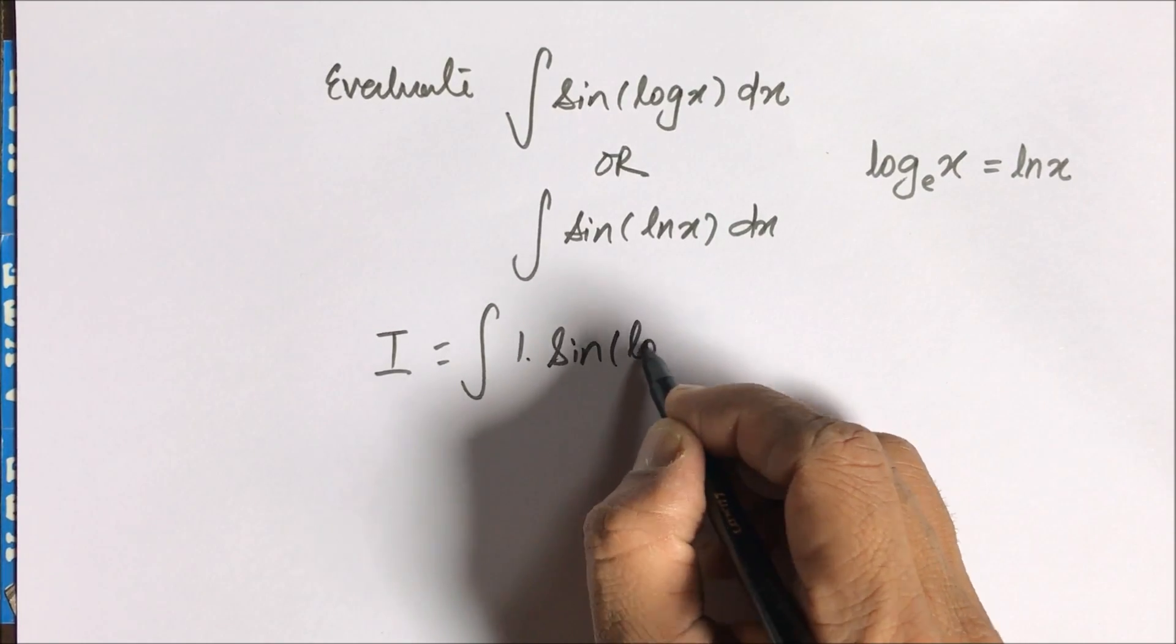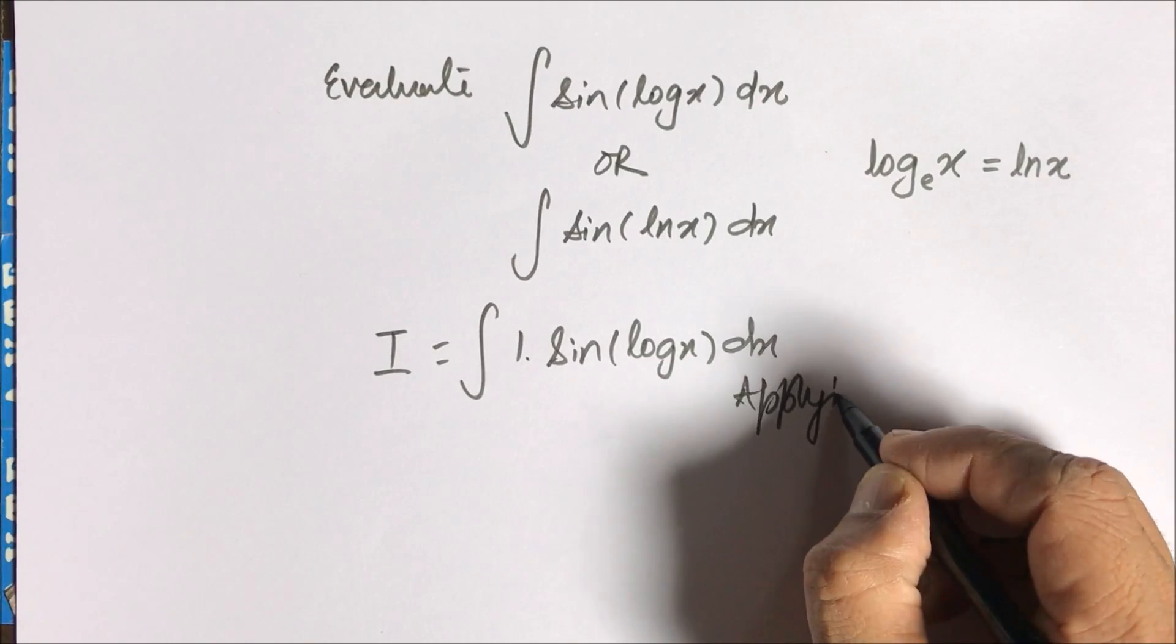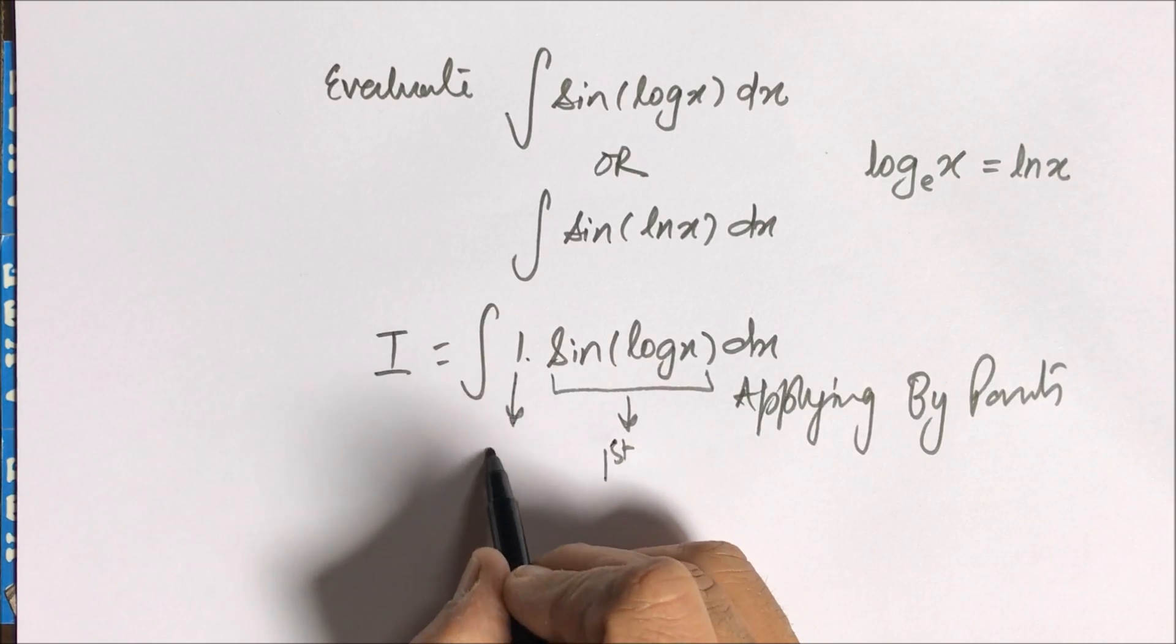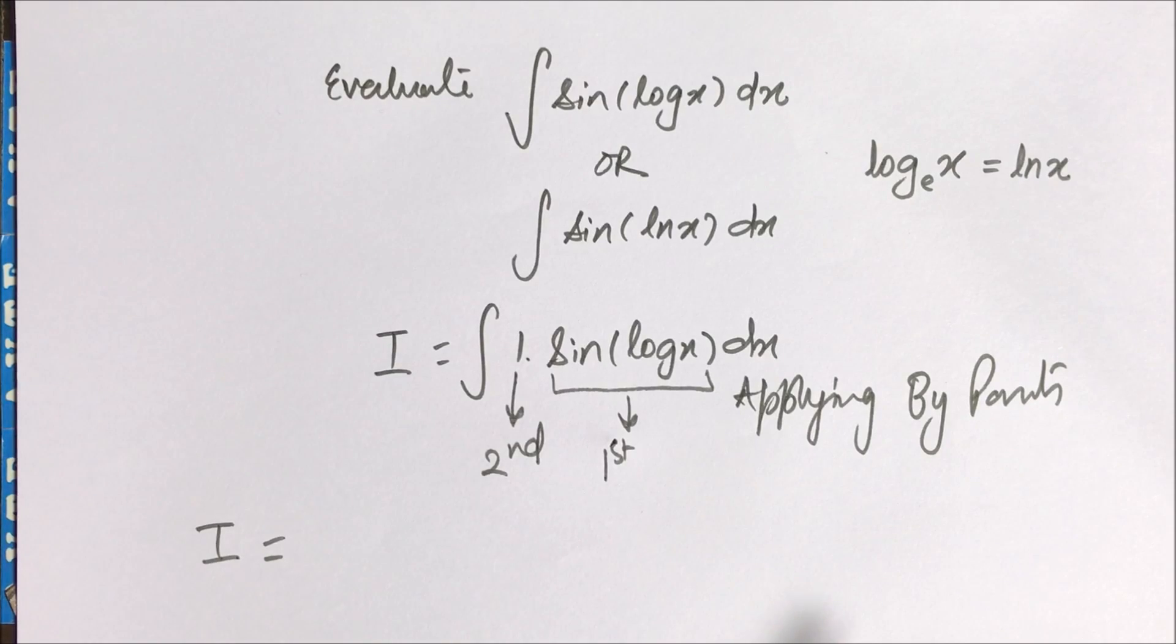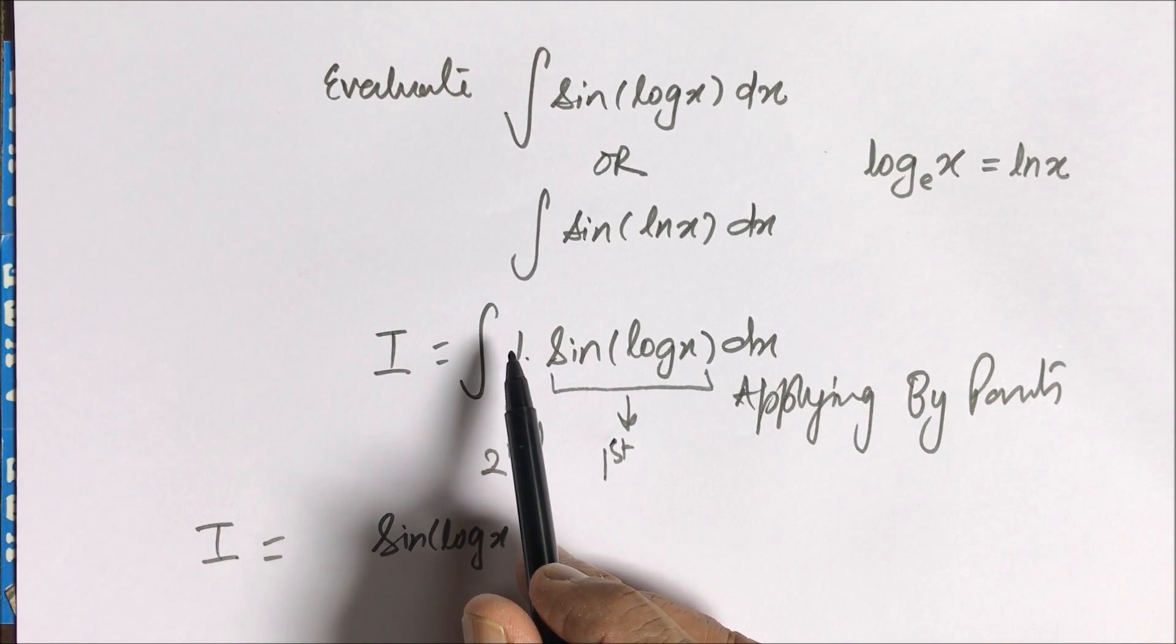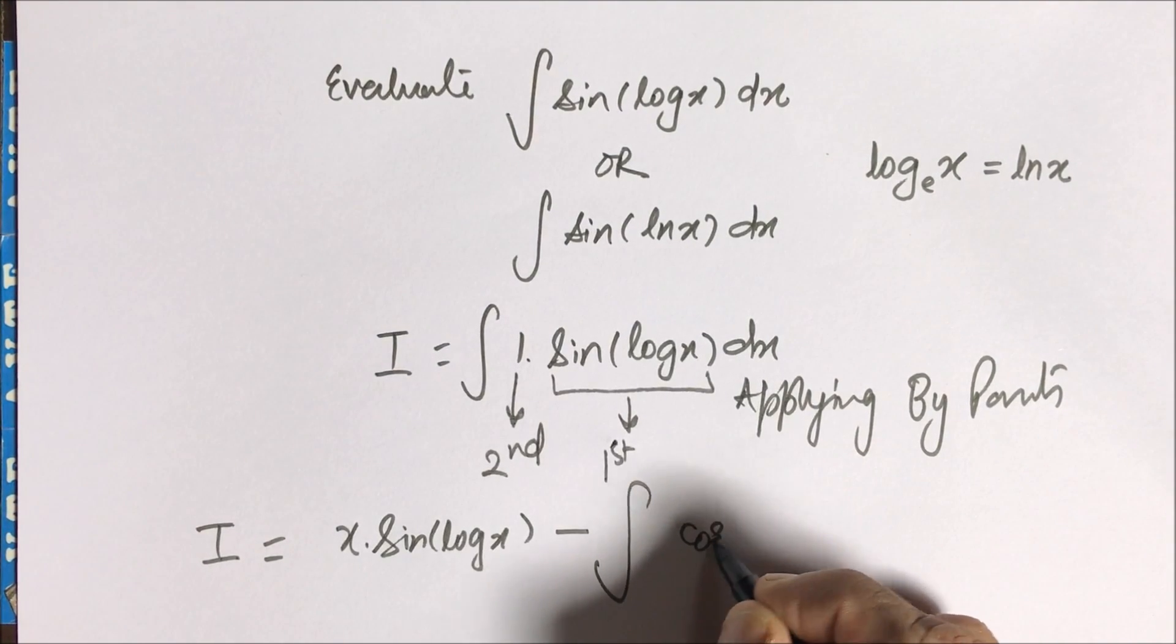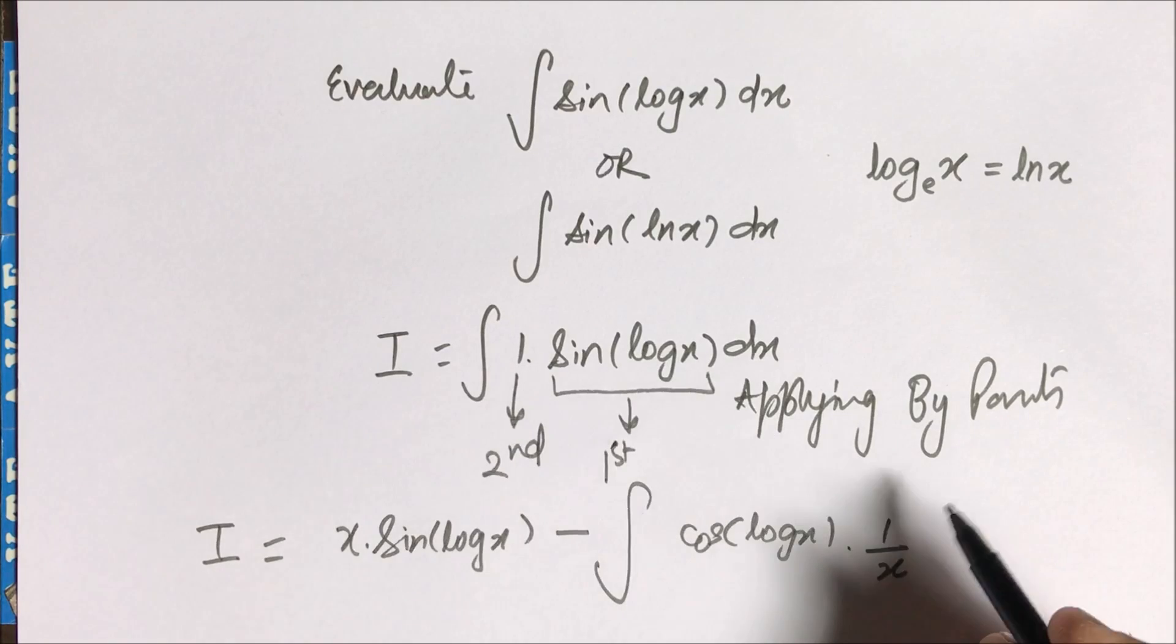So I take it like this and applying by parts. Sin(log x) is the first function and one is the second function. So first function sin(log x) as it is, into the integration of one is x, minus the whole integration of derivative of sin(log x) is cos(log x), and the derivative of log x is 1/x, into the integration of one is x.